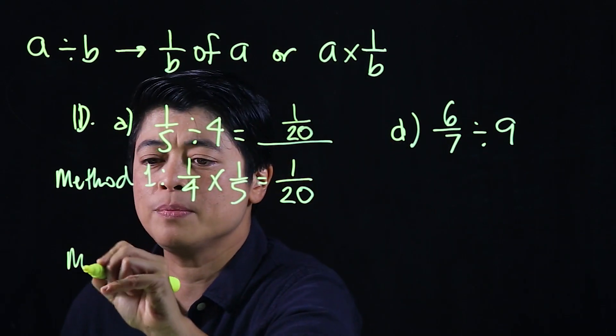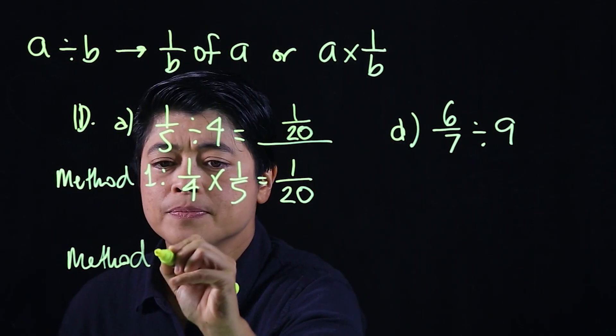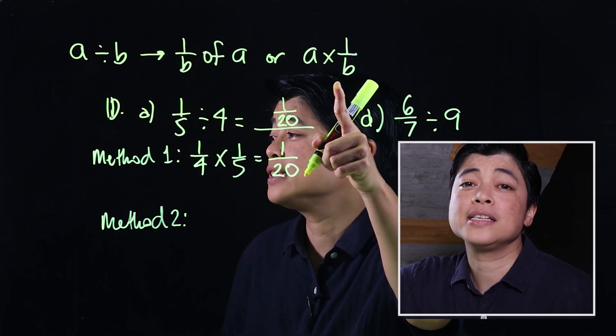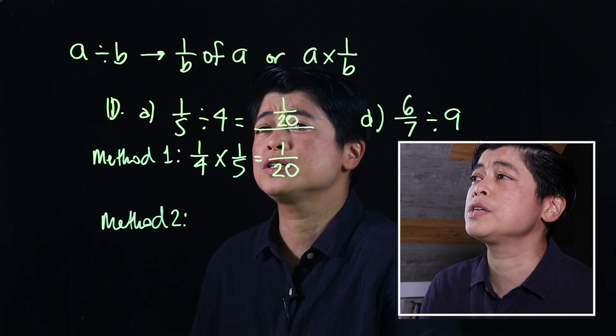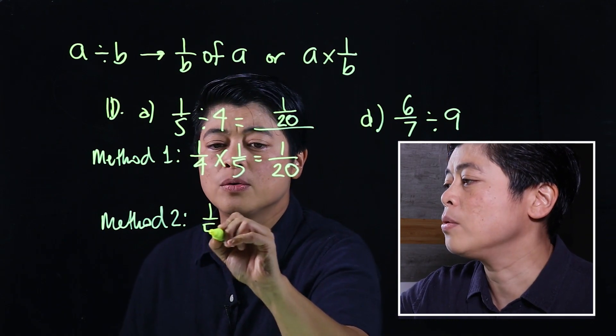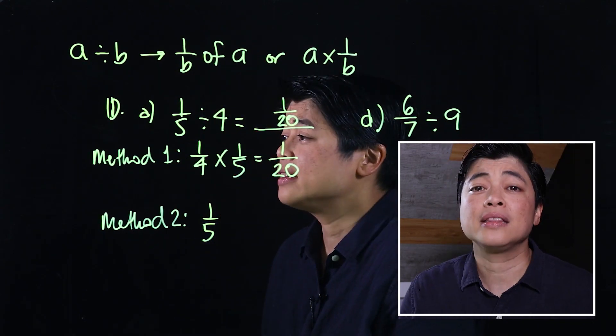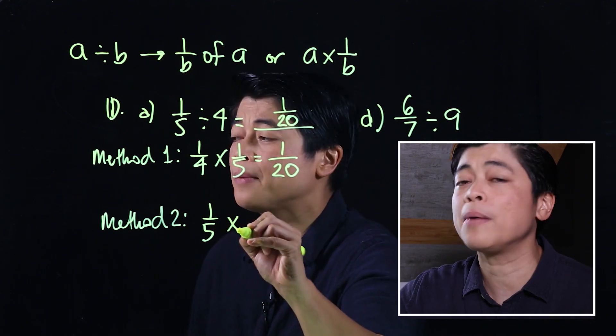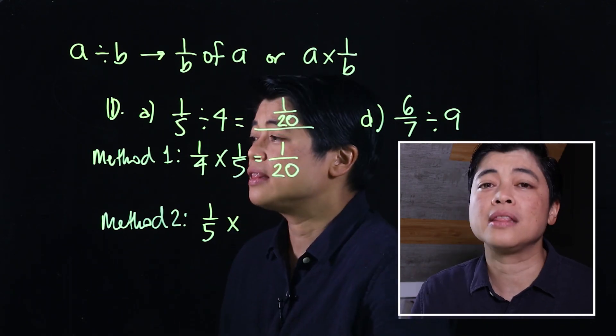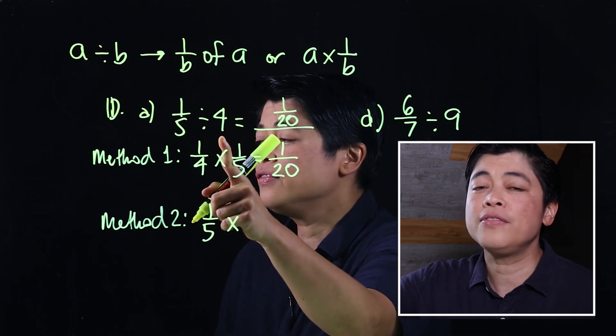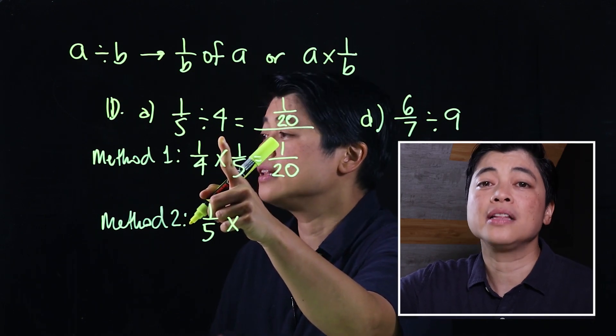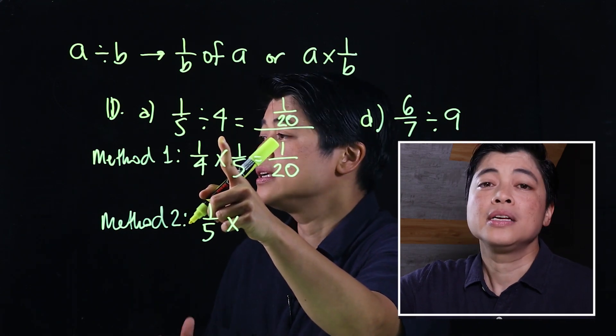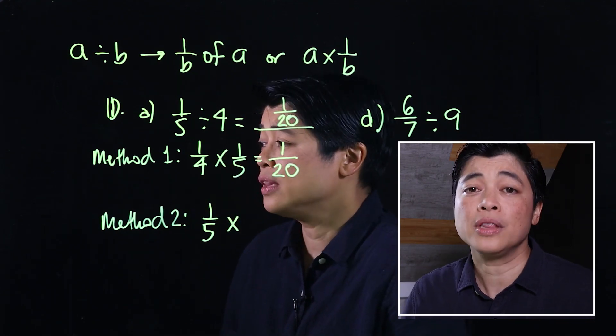However, when we do method 2, this on the long run will be the preferred method. We keep the 1/5 since we cannot divide, we need to multiply. But when we change the operation, we need to take the reciprocal of the number after the division sign. Once you change, you take the reciprocal.